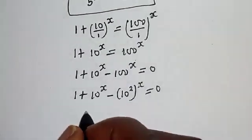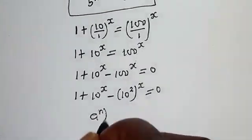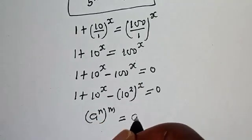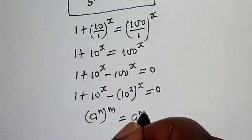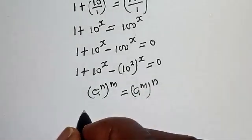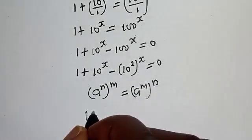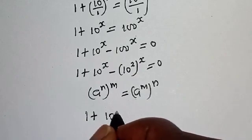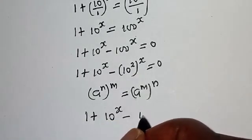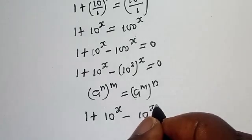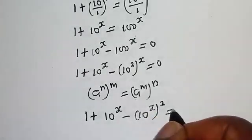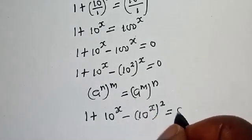Take note that e raised to power n, to the power of m, is equal to e raised to power (m times n). So 100^s can be written as (10^2)^s which equals 10 raised to power 2s. We then have 1 plus 10^s minus (10^s)^2 is equal to 0.